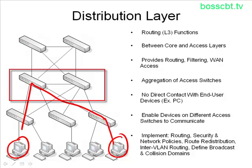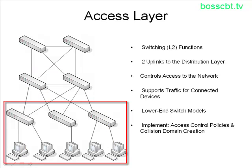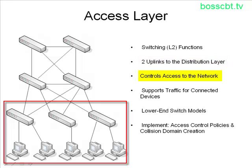Let's take a look at the access layer. The access layer is where our switching or Layer 2 functionality resides. Each access layer switch generally has two uplinks to the distribution layer, which can be done for redundancy — should one link fail, you have a backup — or for load balancing if a single link would be saturated by traffic. The access layer is where access to the network is controlled: you have PCs and servers connected there, and on the access layer switch you can control whether a port is administratively up or down and what security policy is associated with it.